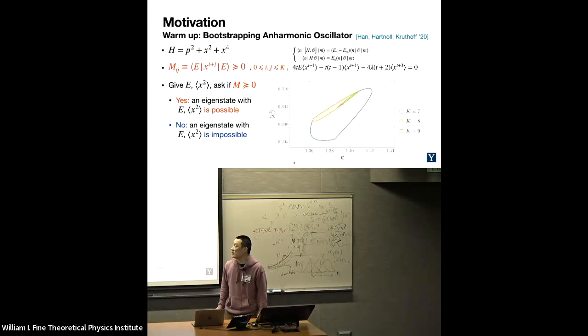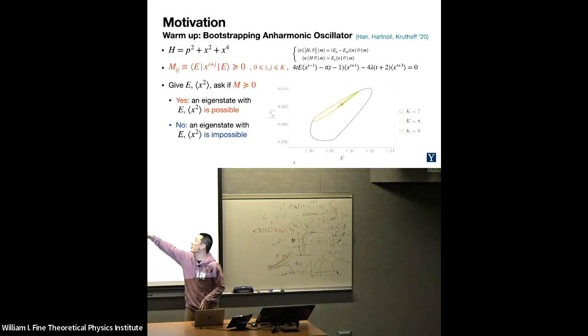To see how it works, we currently have a version of this method that's working in quantum mechanical systems and lattice systems. An easy example is the anharmonic oscillator, so we start with zero plus one D quantum mechanics with this Hamiltonian. If we remove the interaction term, this is just a simple harmonic oscillator, but if we add this phi to the fourth coupling then a lot of things become very complicated and it's very difficult to get analytic results.